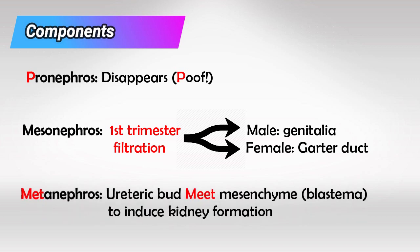And finally, the metanephros is formed by two parts: the ureteric bud and the blastema. The ureteric bud has to meet the blastema to induce its differentiation into a fully grown kidney.